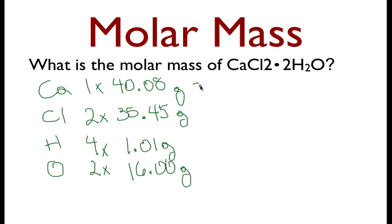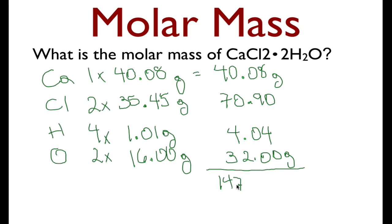The next step, we're going to multiply these through. It's just one calcium, so this is 40.08 grams. This is 35 times 2 is 70.90. 4 times this is 4.04, and this last one, 16 times 2 is simply 32.00 grams. So I add them all up, I get 147.02 grams. That means that the molar mass of calcium chloride dihydrate is equal to 147.02 grams. That is the answer.